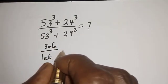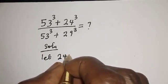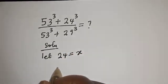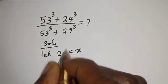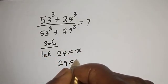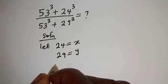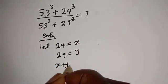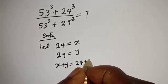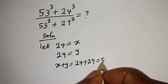Let s equal 24 and y equal 29. Then s plus y is equal to 24 plus 29, which is equal to 53.